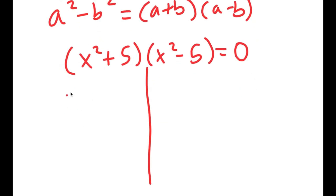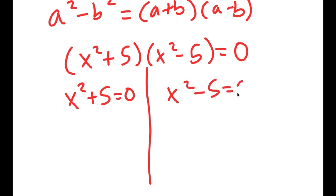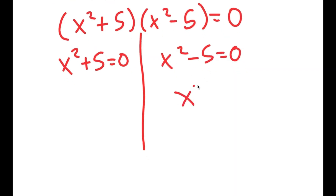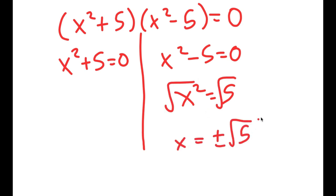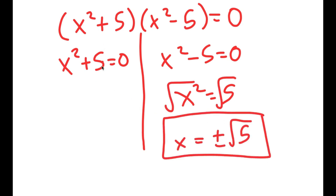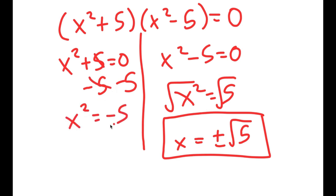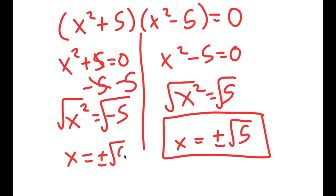This gives two equations: x squared plus 5 equals 0 and x squared minus 5 equals 0. For x squared minus 5 equals 0, I get x squared equals 5, so x equals plus or minus the square root of 5. For x squared plus 5 equals 0, I get x squared equals negative 5, so x equals plus or minus the square root of 5 times i.